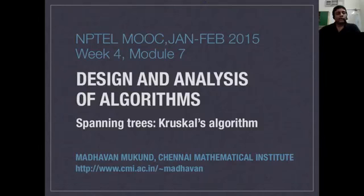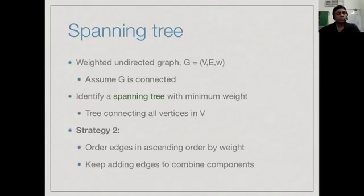We have seen one algorithm for the minimum cost spanning tree, namely Prim's algorithm. Now let us look at the other strategy, namely Kruskal's algorithm. We are looking for a minimum cost spanning tree in a weighted undirected graph. Prim's algorithm starts with some edge and gradually expands it into a tree, whereas Kruskal's algorithm follows the other strategy, which is to order all the edges in ascending order of weight.